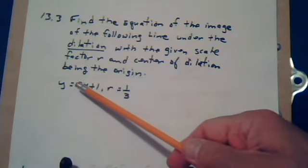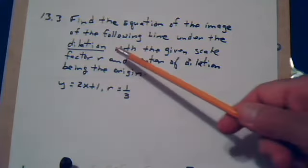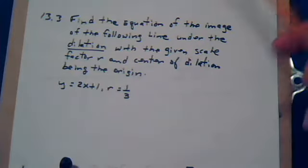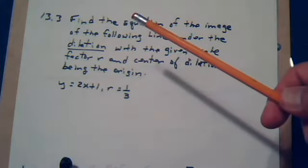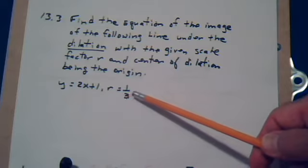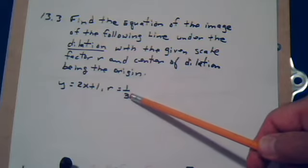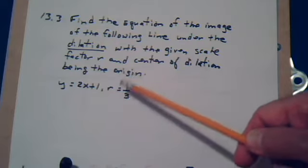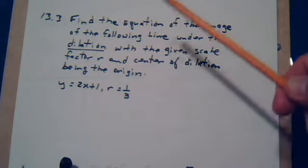So this is the pre-image and this is the scale factor. Remember, for a dilation you're either going to magnify or reduce. Since this is a number between 0 and 1, we're going to reduce. If R was greater than 1, we would magnify or enlarge.